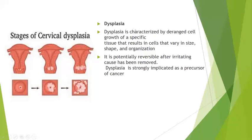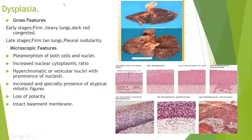Dysplasia is characterized by deranged cell growth of a specific tissue that results in cells that vary in size, shape and organization. It is potentially reversible after the irritating cause has been removed, and dysplasia is strongly implicated as a precursor of cancer. Grossly, dysplasia occurring in the lungs: in early stages, the lungs are firm, heavy, dark red and congested; in later stages, they are firm with tanned appearance and pleural nodularity. Microscopically, there is pleomorphism of both cells and nuclei, increased nuclear-to-cytoplasmic ratio, hyperchromatic or vesicular nuclei with prominent nucleoli, increased presence of atypical mitotic figures, and loss of polarity with an intact basement membrane.